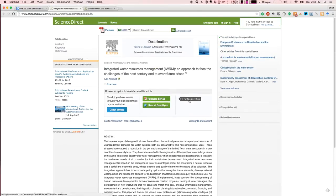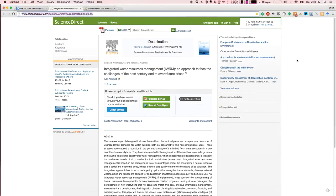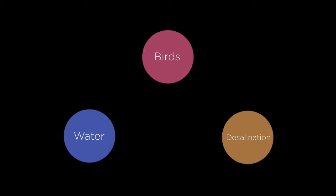Daunted by the prospect of wading through all this arcane language, Brian decides to turn to Erasmus, no wiser than he was when he began the Google Scholar search. He does, however, know that water, birds, and desalination are central to the concept space that he'd like to explore, but he has no expertise in fluid mechanics, biology, or chemistry.